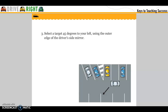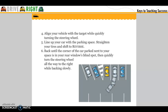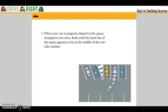Select a target to your left using the outer edge of the driving mirror. Align the vehicle with the target while quickly turning your wheels, and line up your car with the parking space. Straighten your tires and shift to reverse. Back until the corner of the car parked next to your space is in your rear window blind spot, then quickly turn the steering wheel all the way to the right while backing slowly. When your car is properly aligned in the space, straighten your wheels and back until the back line of the space appears in the middle of the rear side window.